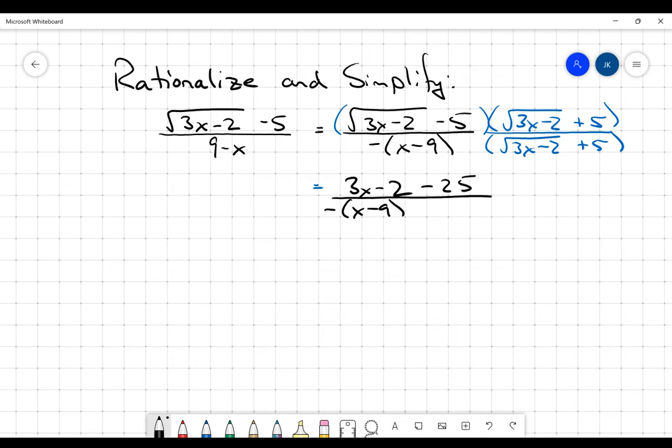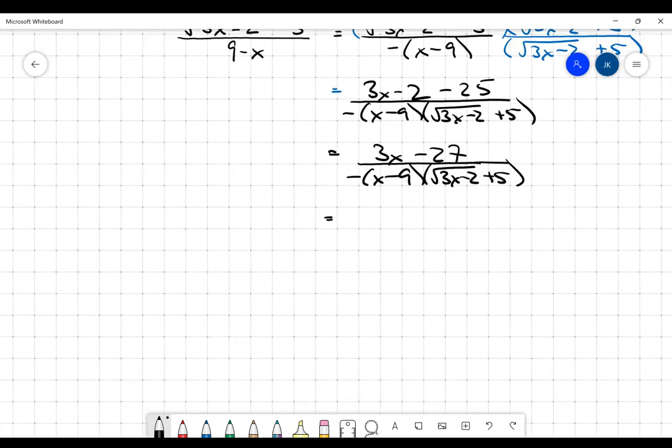Now, in the denominator, I'm just going to leave things right now, kind of hoping that that x minus 9 is going to disappear here in just a second. Now, 3x minus 2 minus 25, that's going to be 3x minus 27. What's nice about that is I can see a common factor of 3 up there. So now I'm going to factor out that 3, and I get x minus 9, and that's what I was looking for.